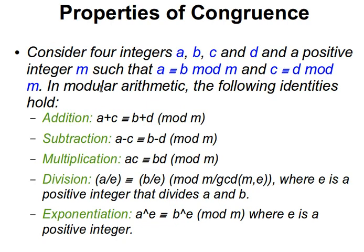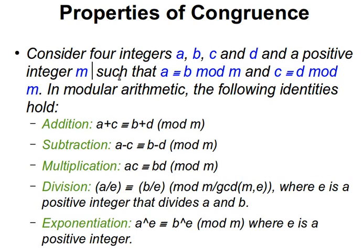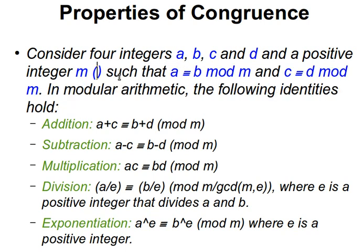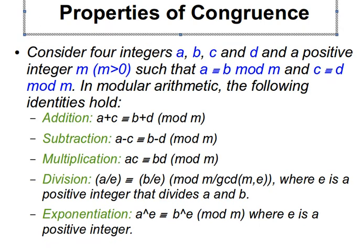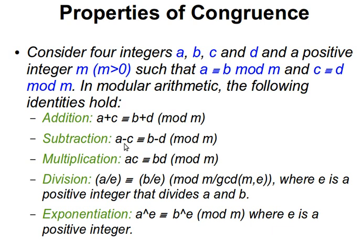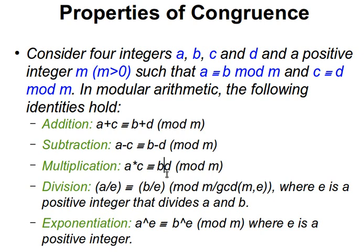Some properties of congruence. If we have four numbers, let's say A, B, C and D and a positive integer M. So remember here we mentioned that N needs to be larger than 0. M again is the modular. Here, there it was N, here it's M. Such that, for example, A is congruent to B modulo M and C is congruent to D modulo M. So we have this condition here that, okay, M is positive, M is, let me just write that down quickly there, that M is greater than, M is greater than 0. And A is congruent to B modulo M, C is congruent to D modulo M. Then in modular arithmetic, the following identities hold that for addition, we can say A plus C is congruent to B plus D modulo M. A minus, for subtraction, A minus C is congruent to B minus D modulo M. For multiplication, A times C, let's use a star for times, A times C is congruent to B times D modulo M.